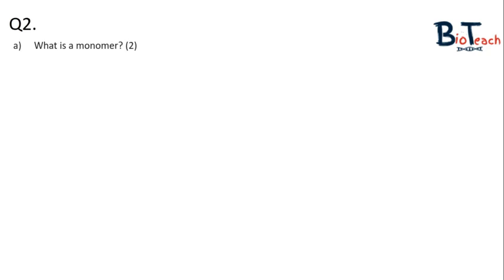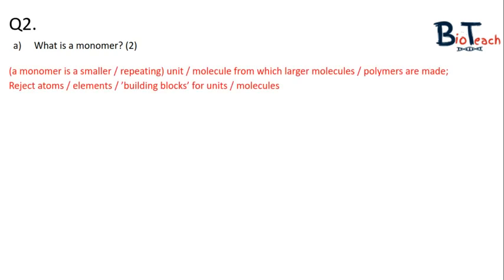Question number two: 2A is asking for the definition of a monomer. This is something I've covered in my monomers and polymers video. The definition being a smaller repeating unit from which larger molecules are made. This would give you the two marks. Please note that they will reject answers that state the monomer is a building block.